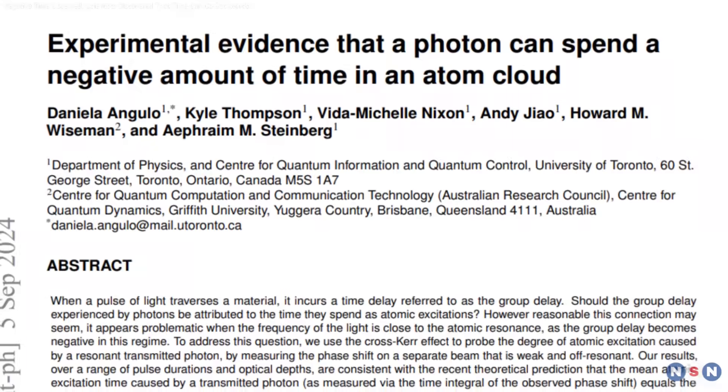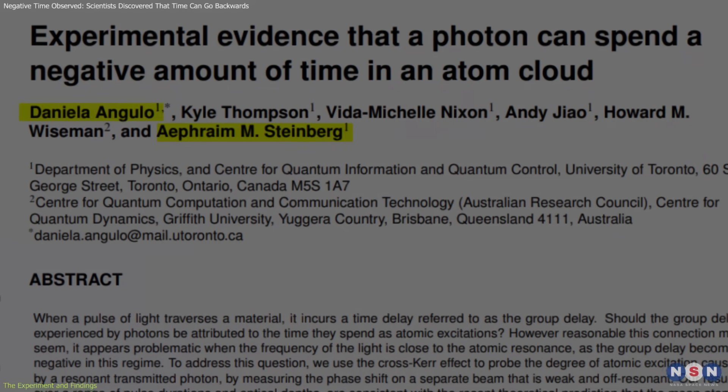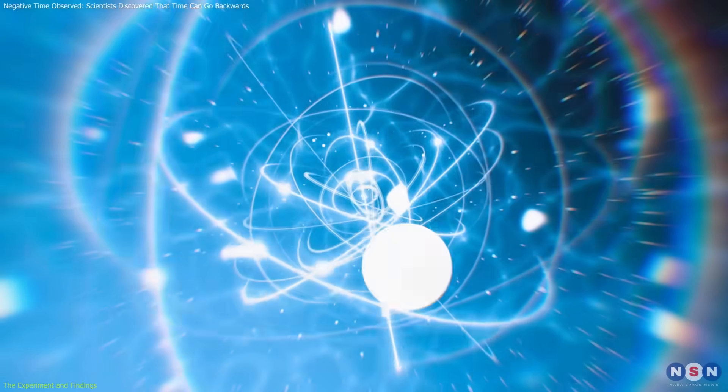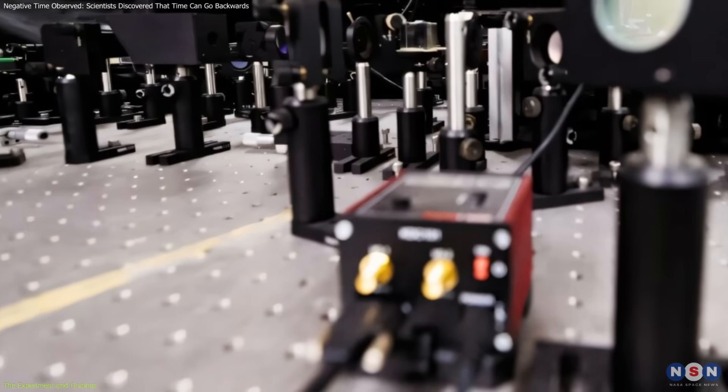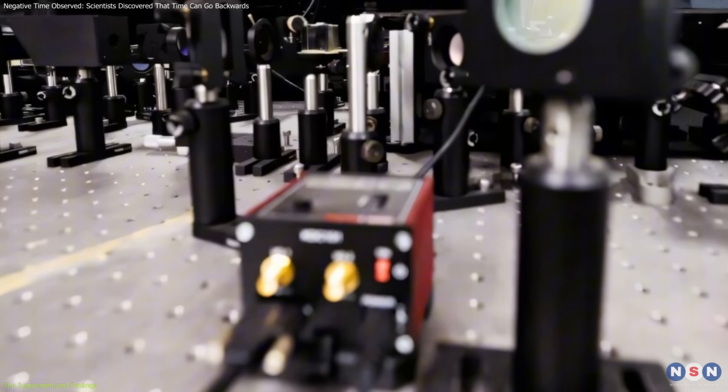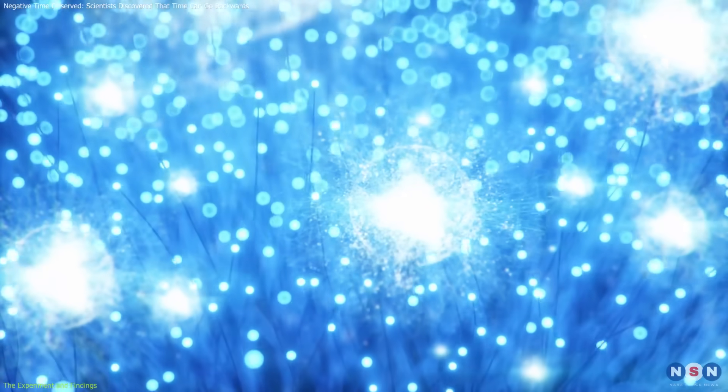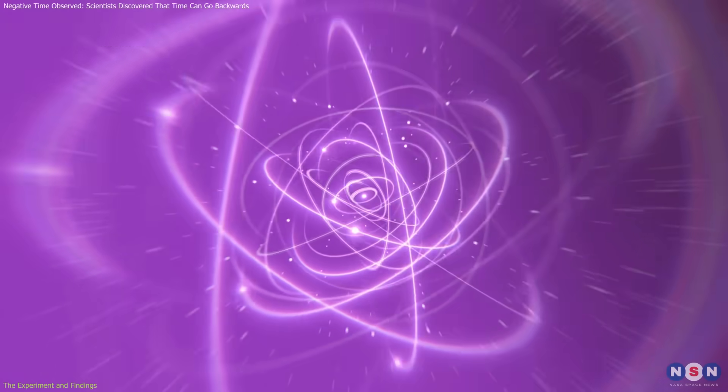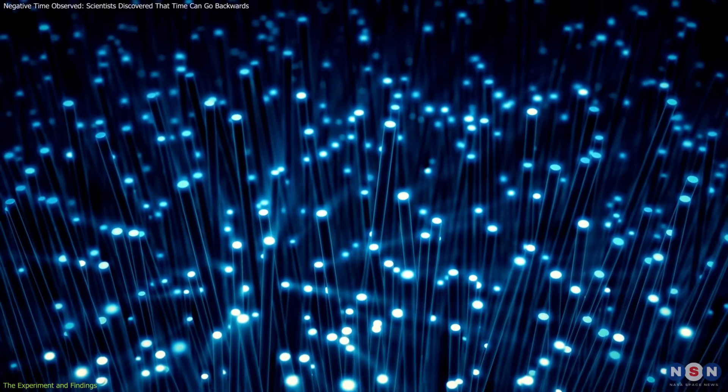The experiment conducted by Daniela Angulo and Ephraim Steinberg's team aimed to measure how photons interact with matter, particularly how long atoms stay in an excited state after absorbing light. Using lasers and an apparatus carefully calibrated over two years, the team passed photons through a cloud of atoms. This interaction caused some photons to be absorbed, temporarily exciting the atoms before they returned to their normal state and re-emitted photons.